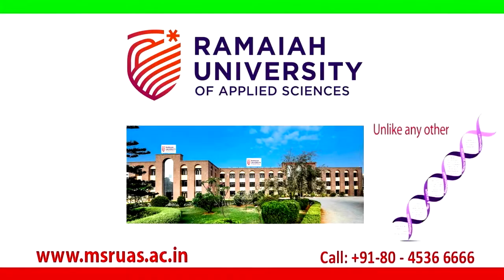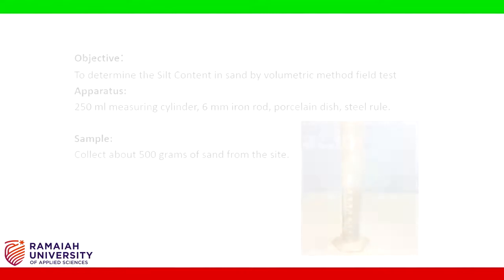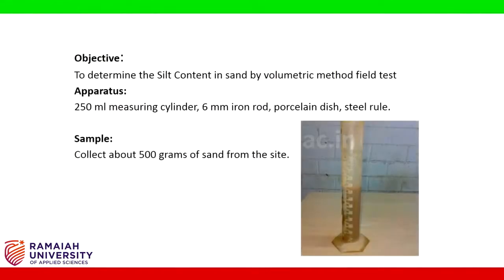MSR University of Applied Sciences. Hello friends, with this experiment we are determining the silt content in sand by volumetric method field test. Apparatus required: 250 ml measuring cylinder, 6 mm iron rod, porcelain dish, steel rule. Sample: collect about 500 grams of sand from the site.